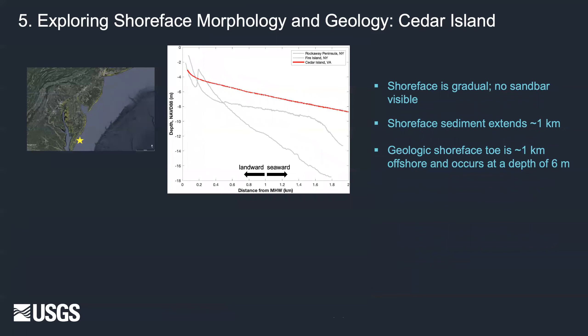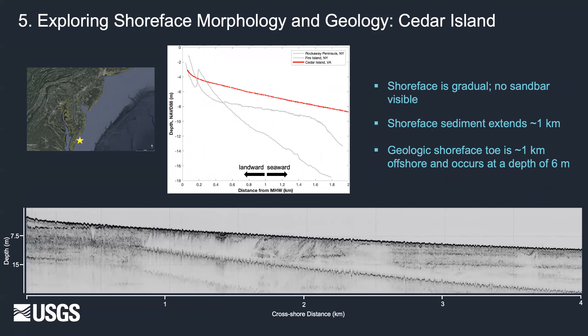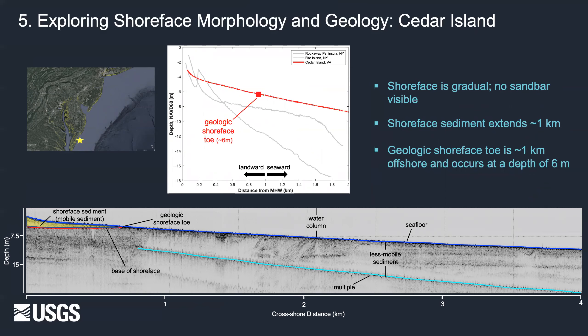Moving further south to Cedar Island, the Cedar Island shore-face is the most gradual of the three, and like Rockaway, no sandbar was measured. However, the geophysical data reveal that the shore-face extends almost a kilometer offshore. But since the shore-face is so gradual, this corresponds to a depth of only six meters — the shallowest of the three geologic toes observed.